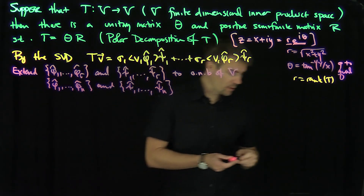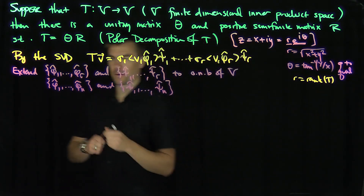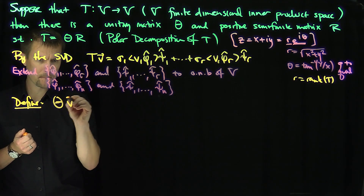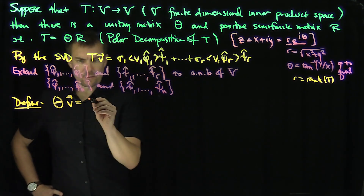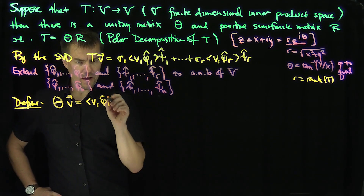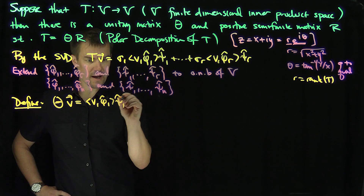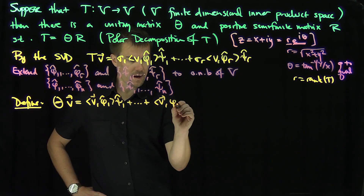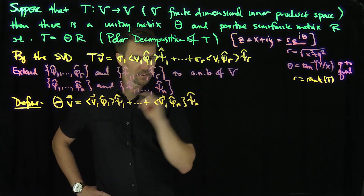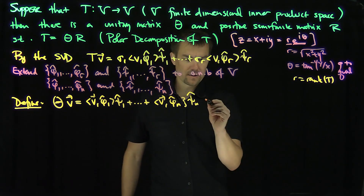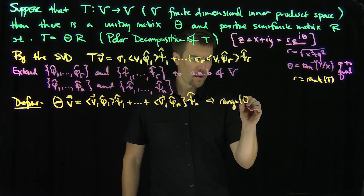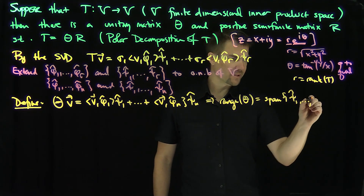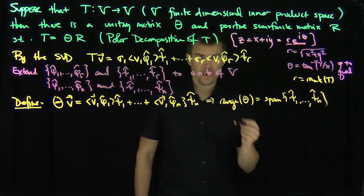Now I'm in position to define our unitary operator. Define θ of V to be: ⟨V, φ̂₁⟩ψ̂₁ + ... + ⟨V, φ̂_N⟩ψ̂_N — note there are no singular values here. The range of θ is the span of ψ̂₁ through ψ̂_N, which is the entire space, so θ is full rank.